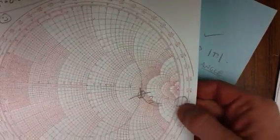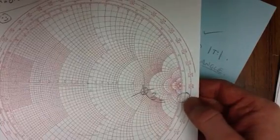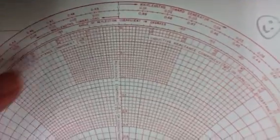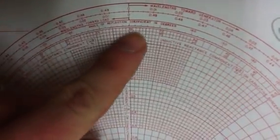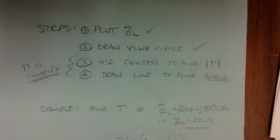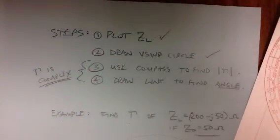To help yourself remember which number to look at, because you have one, two, three, many different numbers to choose from, if you look on this side, it's the set of numbers that says angle of reflection coefficient in degrees. And that's how you find a reflection coefficient using the Smith chart.